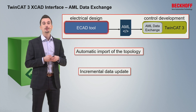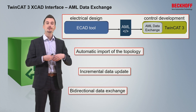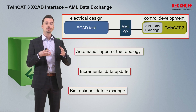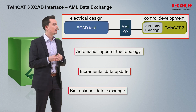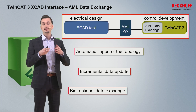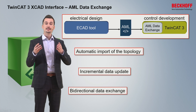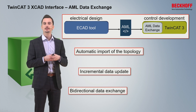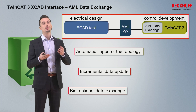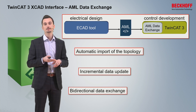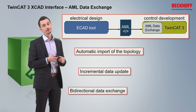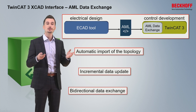At a later stage in your project, you can also use the bidirectional data exchange. For example, if you are doing commissioning and changing the IO topology on the TwinCAT 3 side, it is necessary to send those changes back to the ECAD tool side to update the electrical plan for documentation purposes and also in case of a service case. This is possible with the help of the AutomationML format and those unique IDs.